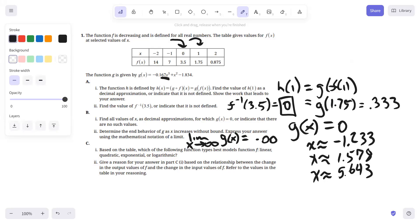Part C, based on the table, which of the following function types best models the function F: linear, quadratic, exponential, or logarithmic? We could take these function values and graph them in Desmos. You would see that it's going to be a graph that decreases and is concave up, which is hinting at exponential. But also notice that as each X value increases by 1, the Y value decreases by exactly 1 half. So this is exponential.